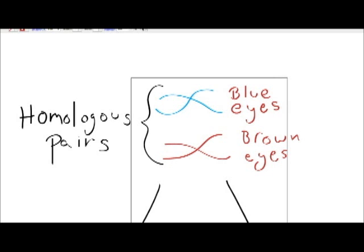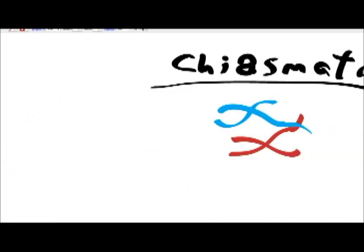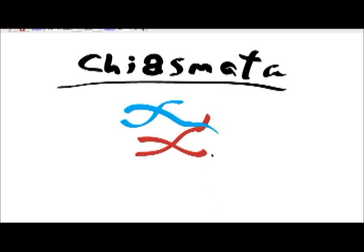This gives rise to a thing called chiasma, which causes variation in the gametes produced through meiosis. Chiasma occurs when the homologous pair are aligned and the chromatids overlap. As the spindle fibres contract in anaphase, the bits that overlap can become sheared off and attached to the other chromatids, forming four genetically unique chromatids.